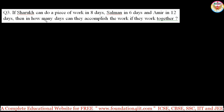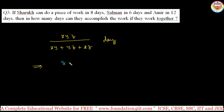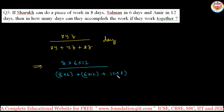Let us see this question. If Shahrukh can do a piece of work in 8 days, Salman in 6 days, and Amir in 12 days, how many days can these 3 members finish the work together? The formula for 3 members is xyz / (xy + yz + xz) days. That means: (8 × 6 × 12) / (8×6 + 6×12 + 12×8). Simplify: 8 × 6 × 12 = 576, and the denominator gives you 216.